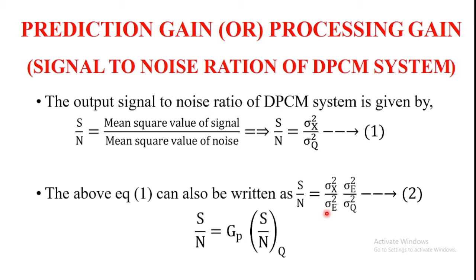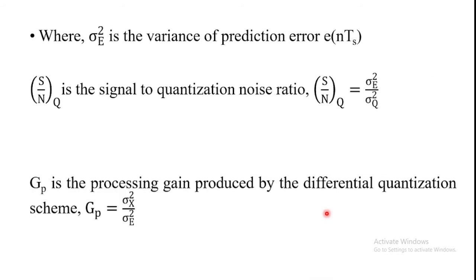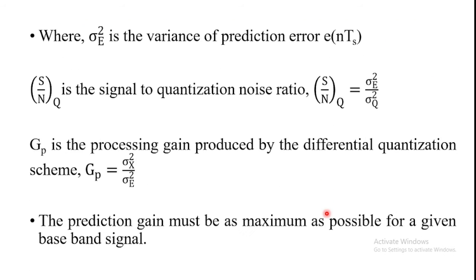This processing gain is produced by the differential quantization scheme. The prediction gain must be as maximum as possible for a given baseband signal.